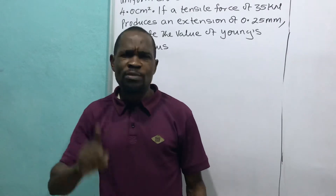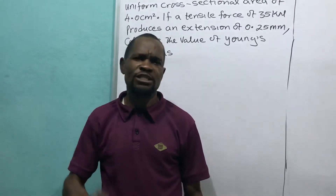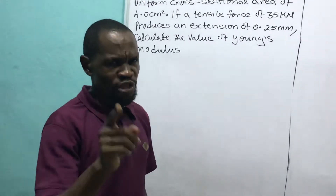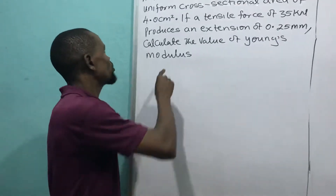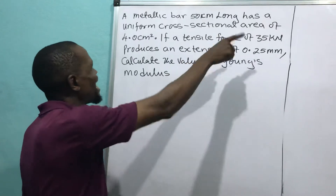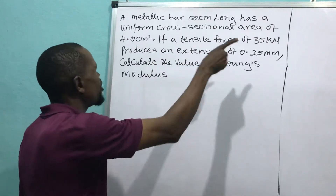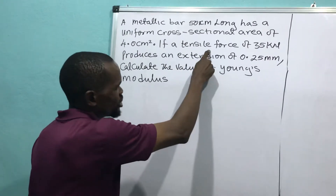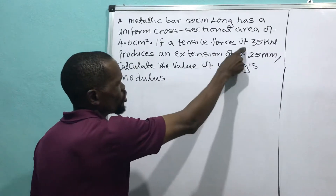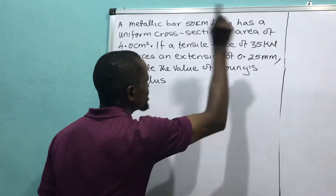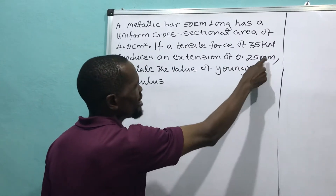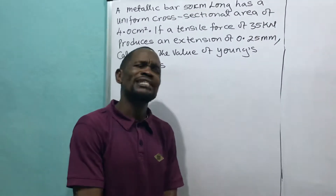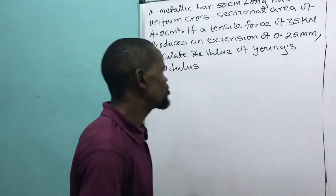Remember to subscribe — subscription is free. Now back to the question: a metallic bar 50 cm long has a uniform cross-sectional area of 4.0 cm squared. If a tension force of 35 kilonewtons produces an extension of 0.25 millimeters, calculate the value of Young's modulus. This question is on Hooke's Law and Young's modulus, so we go straight to the solution.